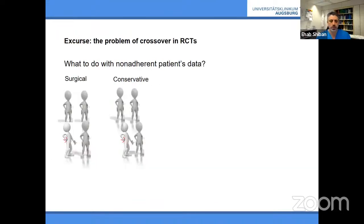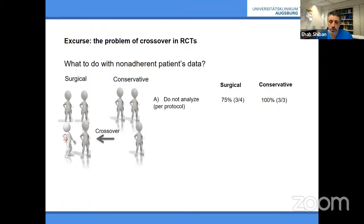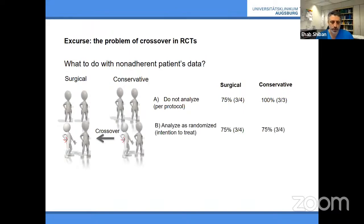Before discussing the data, it's important to understand the difference between intention-to-treat and per-protocol analysis. The problem of crossover is a major issue in RCTs. If a patient is unhappy with conservative treatment and crosses to the surgical arm, what do you do with the data? Per-protocol analysis excludes crossovers — this makes conservative treatment look 100% effective and surgery 75%, which is inaccurate since that crossed-over patient was actually dissatisfied.